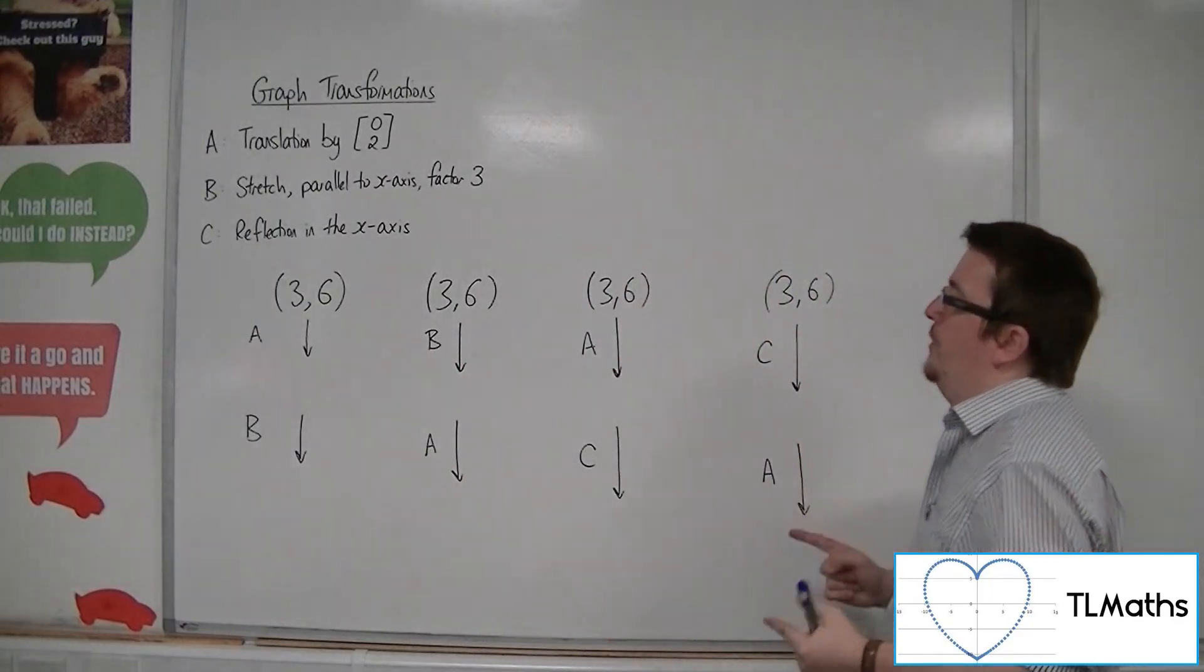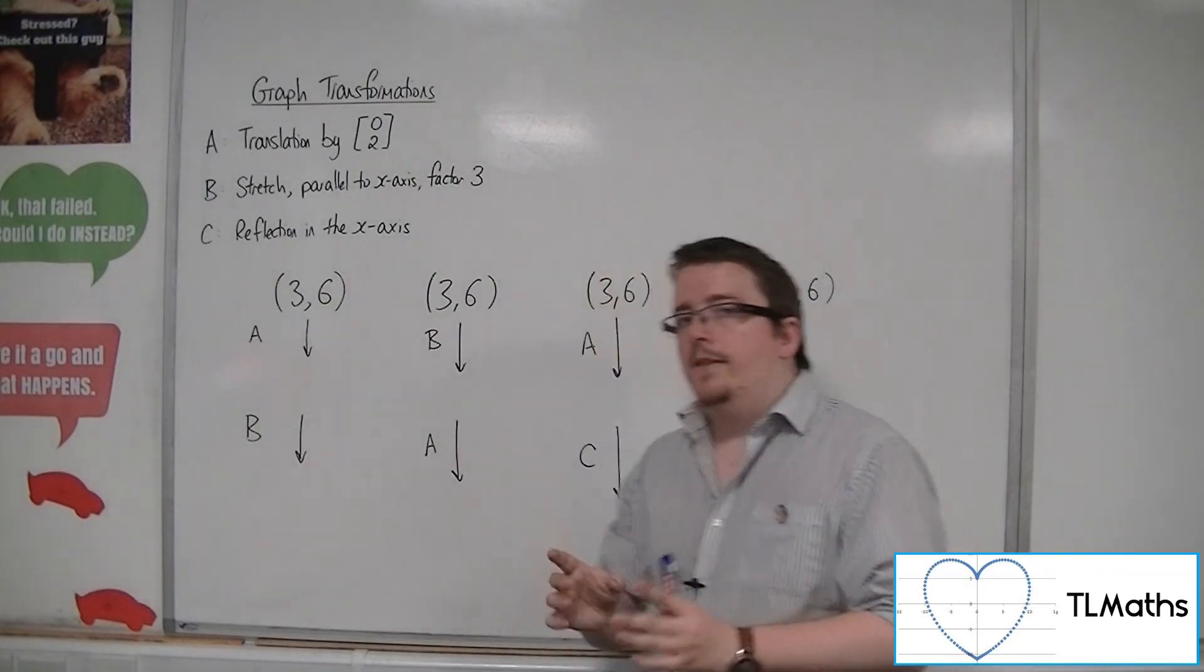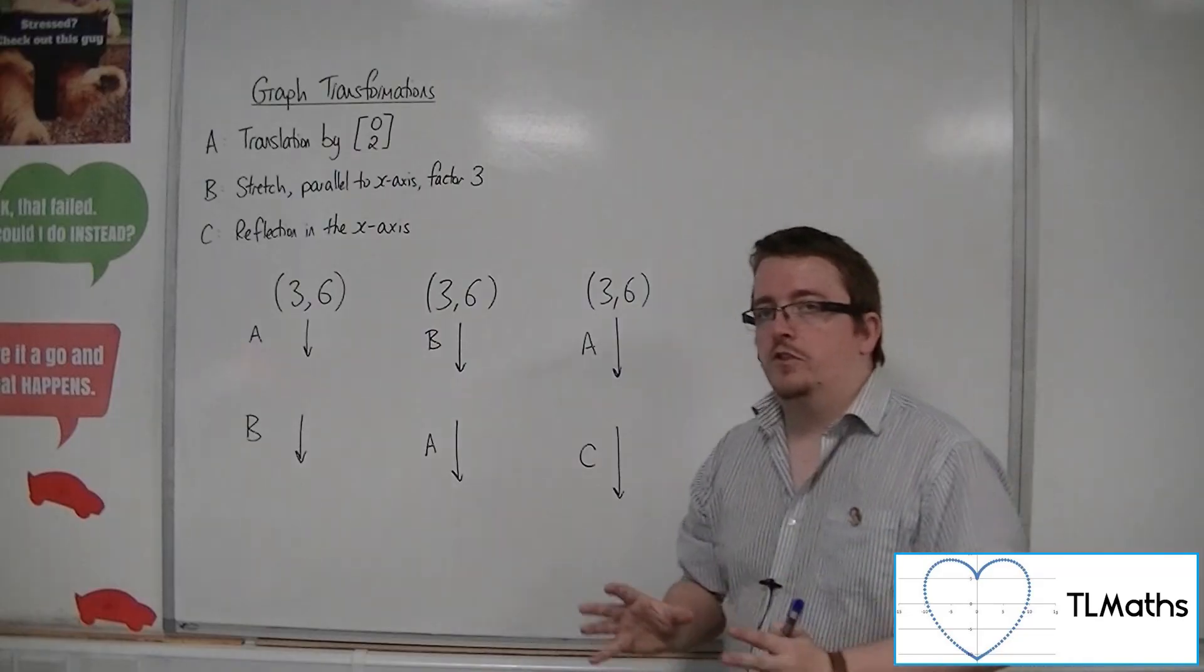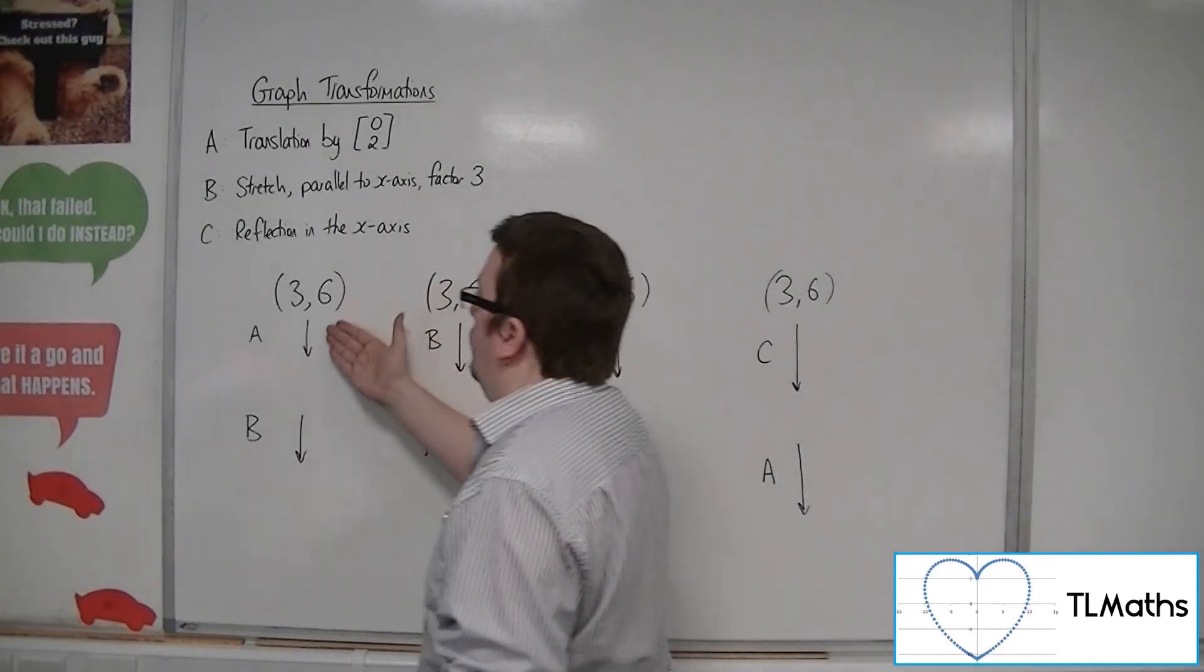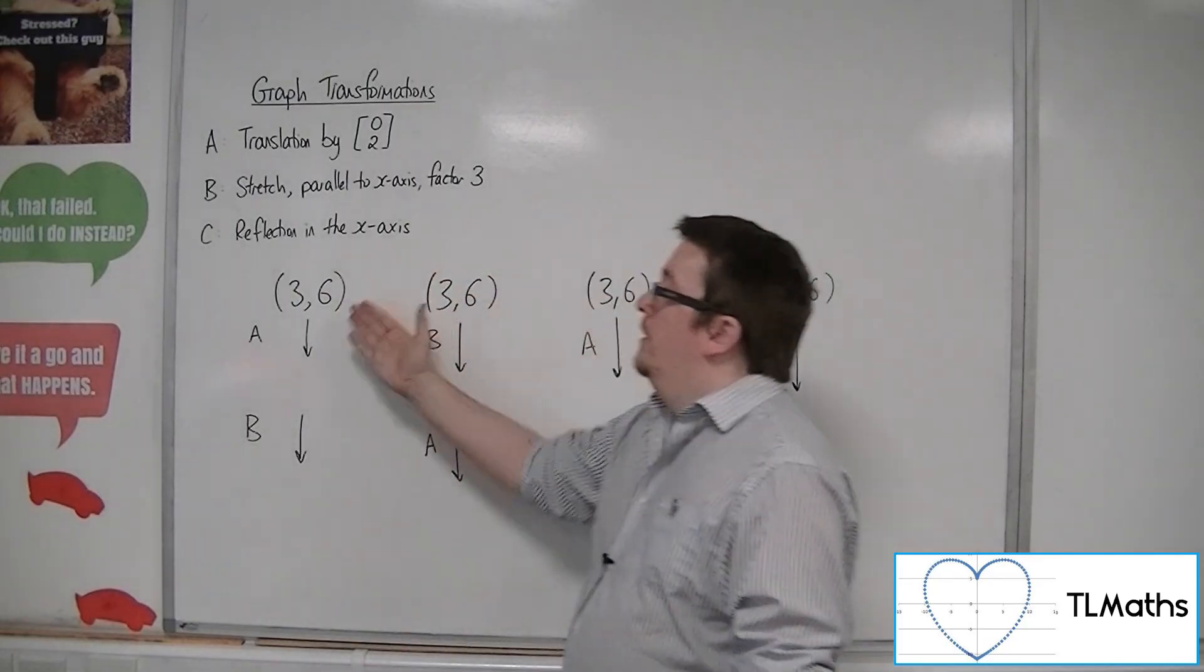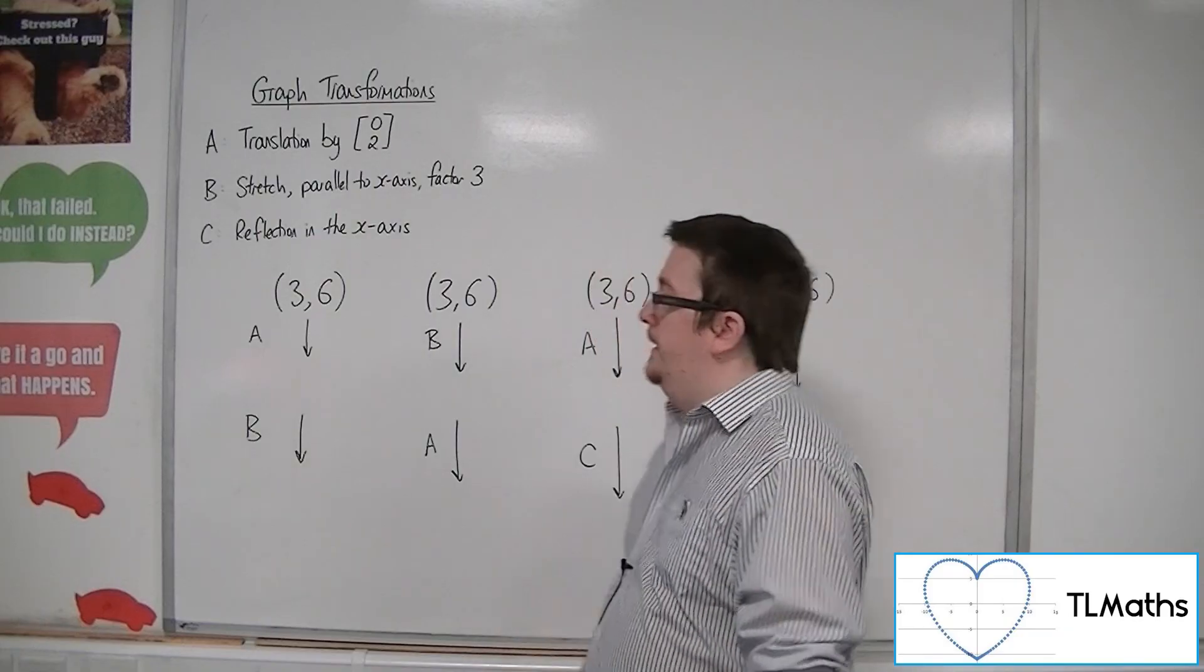So, the point with coordinates (3, 6). And what we're going to do is apply these transformations to those coordinates, to that point. First of all, we're going to start off by applying transformation A, then followed by transformation B.